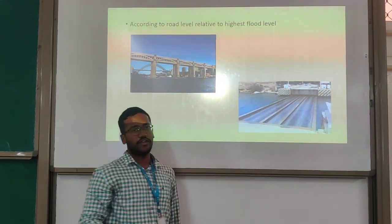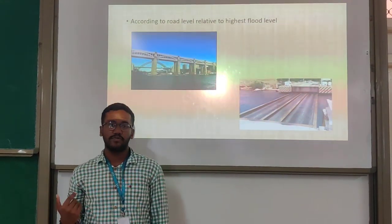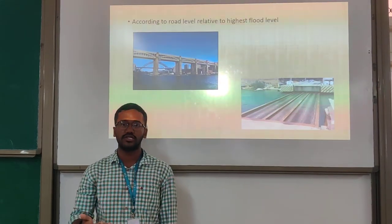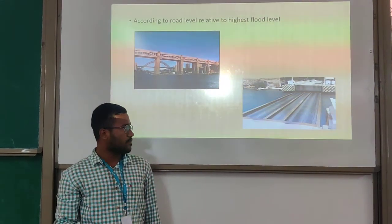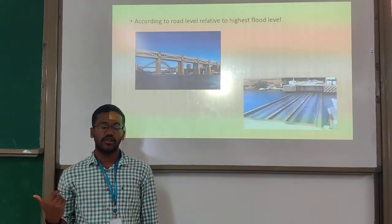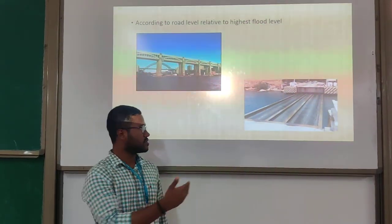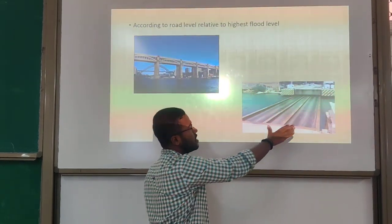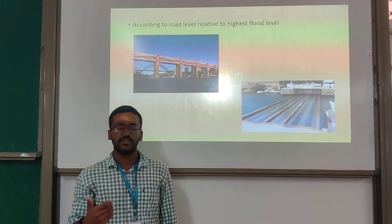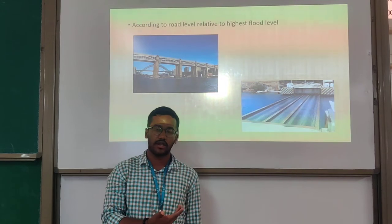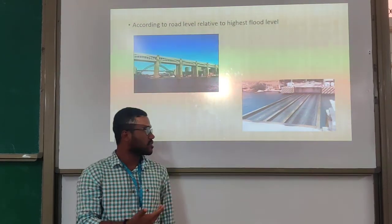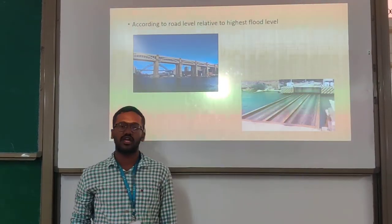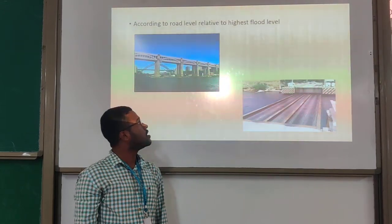In the case of a submersible bridge, if a ship has to pass from one place to another and the bridge is in the way, the span will go under the water level to allow the ship to pass. After the ship has passed, the span returns to the main level and transportation can continue as normal.